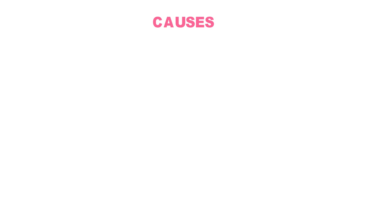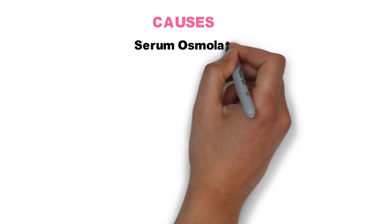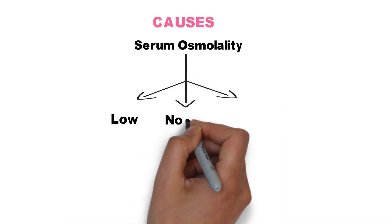The flowchart of causes of hyponatremia is very important and extensive, making it difficult to retain. We will learn it as an interesting story. First, we assess osmolality, which can be categorized into low, normal, and high.